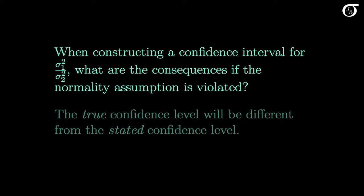When constructing a confidence interval for the ratio of population variances using these methods, what are the consequences if the normality assumption is violated? The quick answer is that the true confidence level will be different from the stated confidence level. Our stated confidence level may be very misleading.